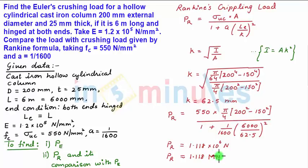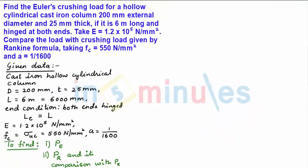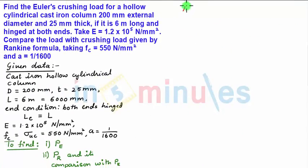This is the second answer. Now comparing PR with PE, the ratio of PR by PE equals 1.118 upon 1.767, which is equal to 0.632.